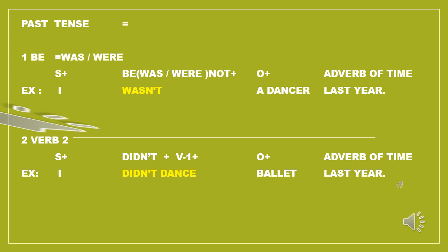Now with all pronouns: You didn't dance ballet last year. He didn't dance ballet last year. She didn't dance ballet last year. It didn't dance ballet last year. We didn't dance ballet last year. You didn't dance ballet last year. They didn't dance ballet last year.